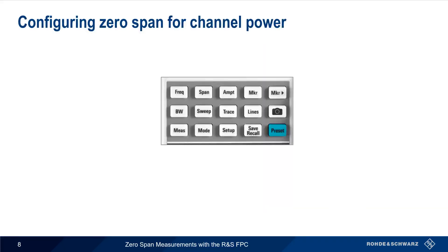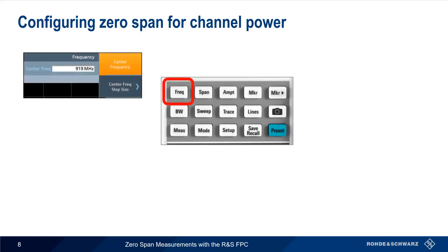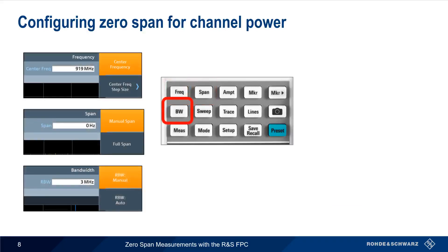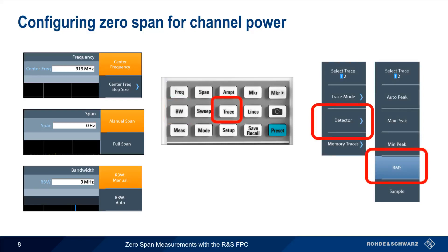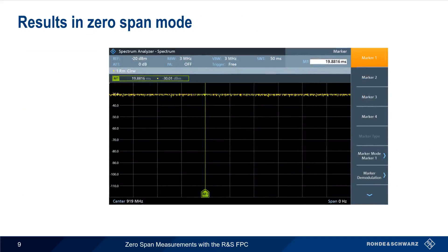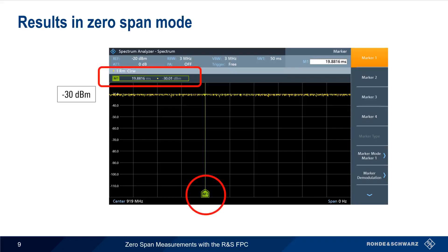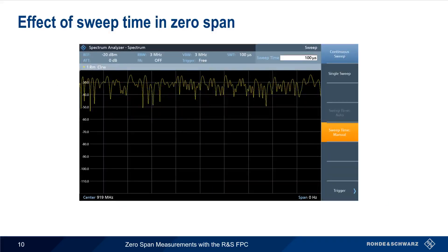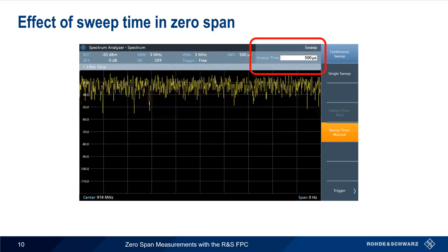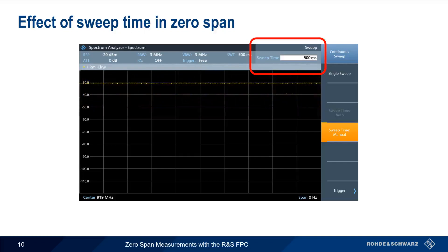Now let's look at measuring channel power using zero-span. As before, we set the center frequency, set span equal to zero, and then choose our resolution bandwidth. Because we're making a power measurement, we also need to set our detector type to RMS, since this is the proper detector to use when measuring power. Assuming that the power of the channel is relatively constant, channel power should appear as a more or less horizontal line on the power versus time display. We can either read the value from the vertical axis, or use a marker to obtain a more precise value. One important parameter when using zero-span to measure channel power is sweep time. Generally speaking, increasing the sweep time will improve the stability and repeatability of our measurement results.